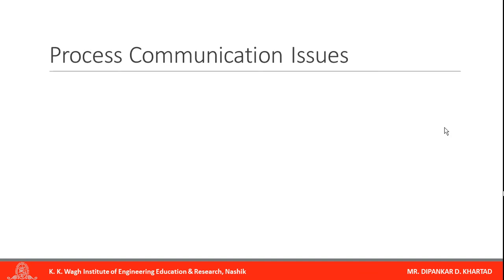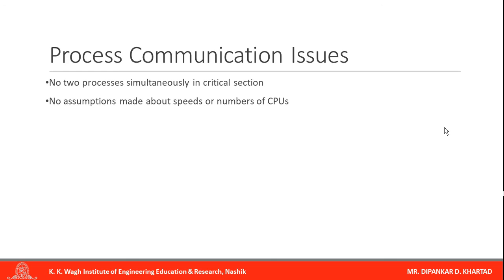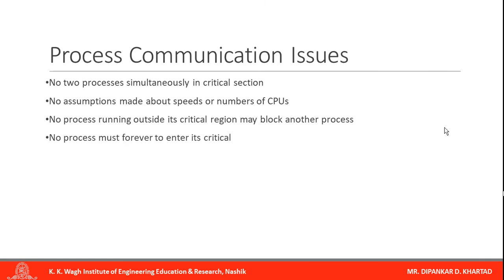There are various issues of process communication. First, no two processes should be simultaneously in a critical section. Second, no assumptions are made about speed or number of CPUs. Third, no process running outside its critical region may block another process. Fourth, no process must wait forever to enter its critical region. Finally, proper sequencing is required when processes have dependencies upon each other.